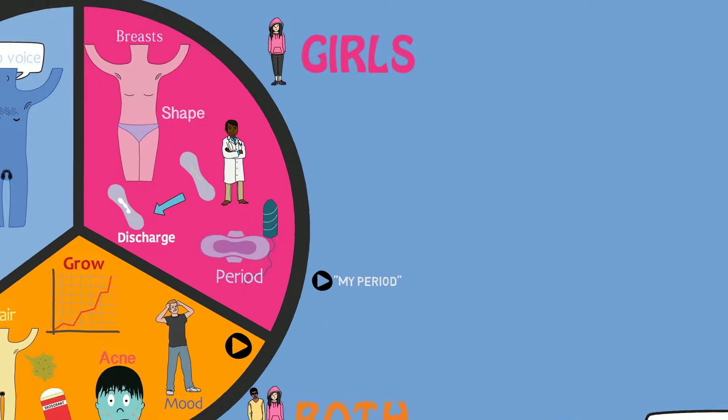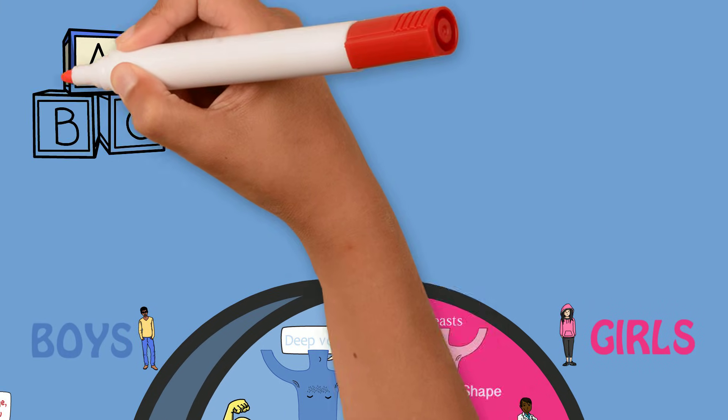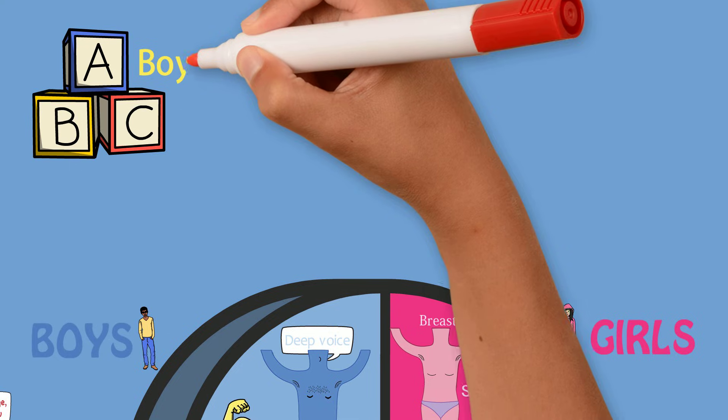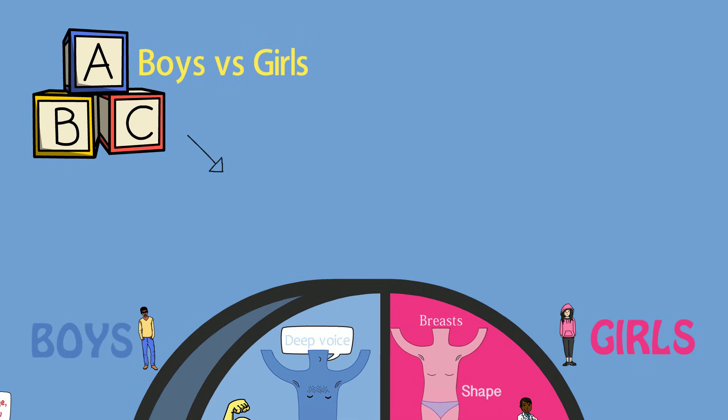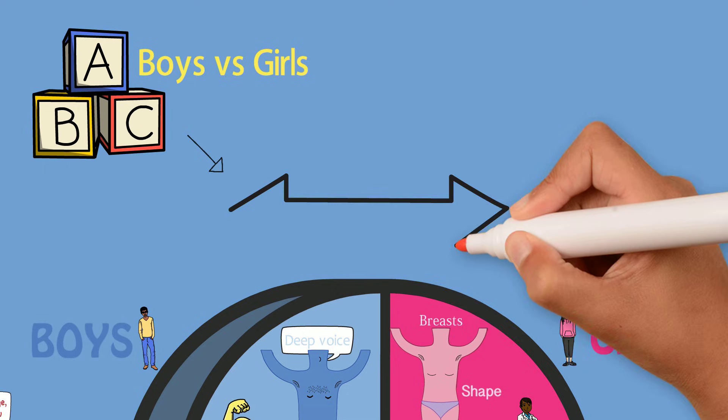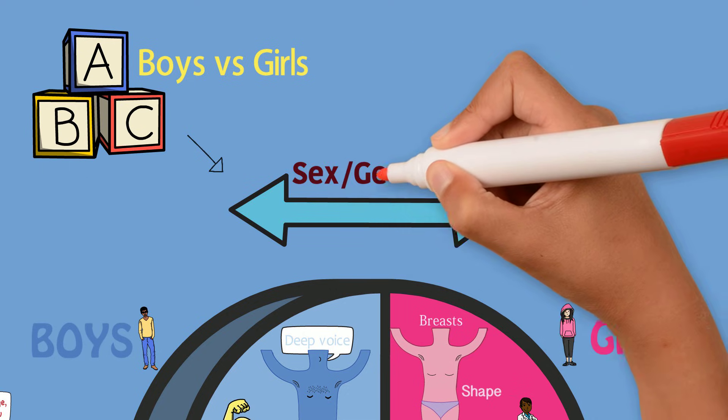The general concepts of what happens to both boys and girls during puberty were simplified in this video to make them easier to understand. It is important to point out, however, that sex and gender fall along a more complex spectrum.